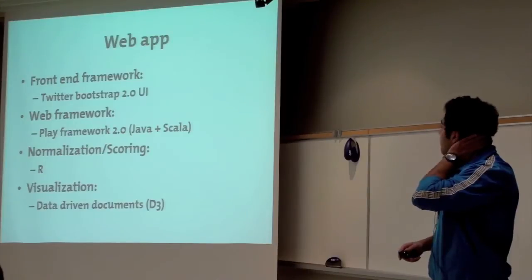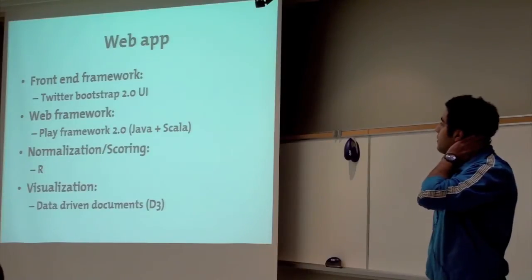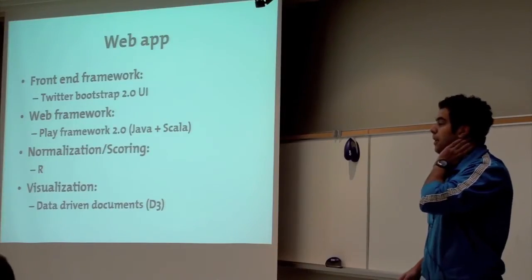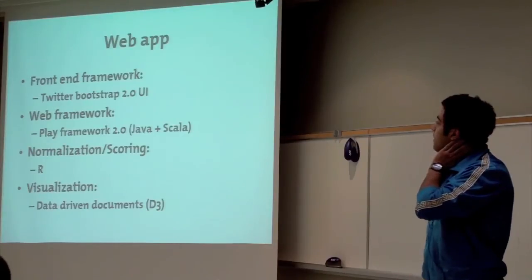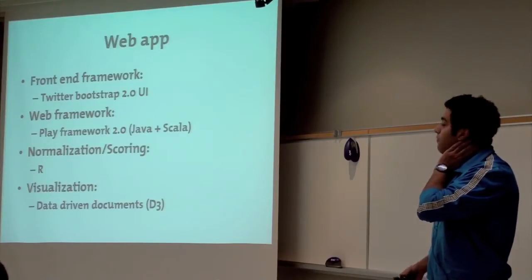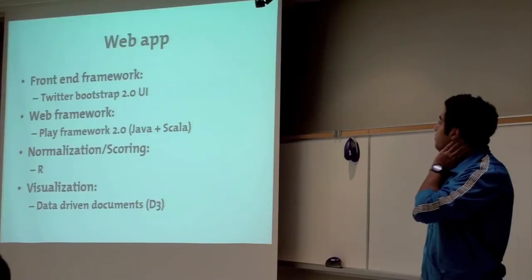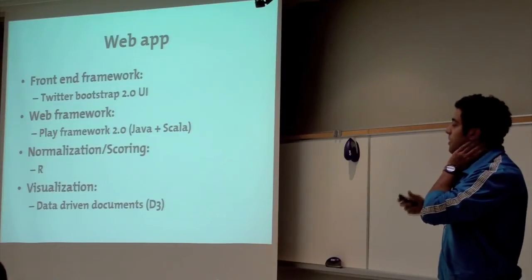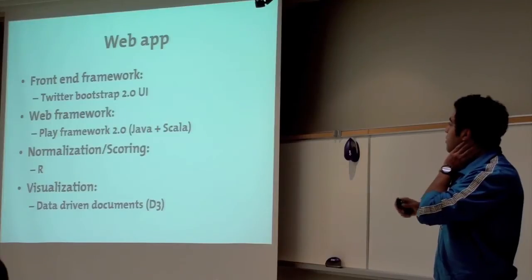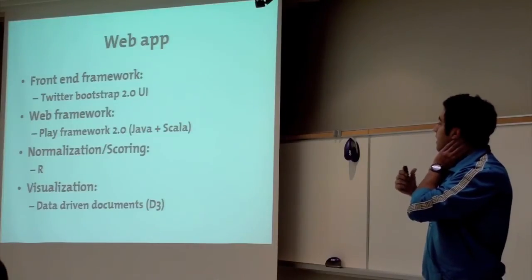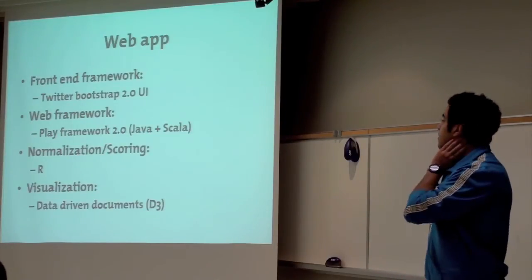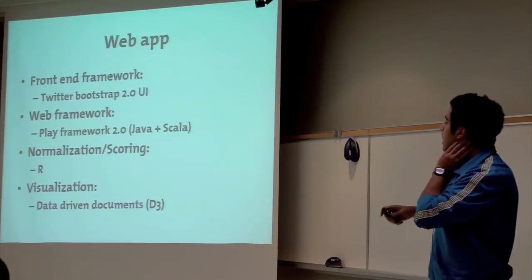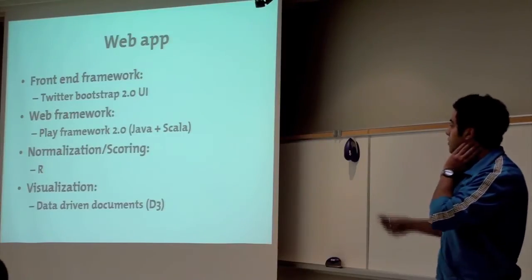The web app was developed using Twitter Bootstrap, which is a front-end framework. The back-end was developed using Play Framework, so that's a web application framework, which typically combines Java and Scala. I'll talk about that later on. And the normalization and scoring was written in R, and we had some pretty cool visualization stuff that was done using this library called Data-Driven Documents.